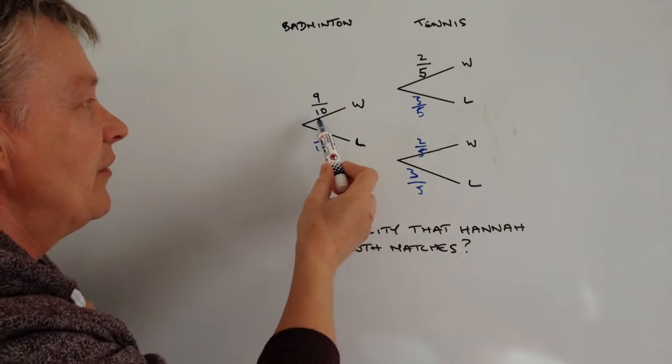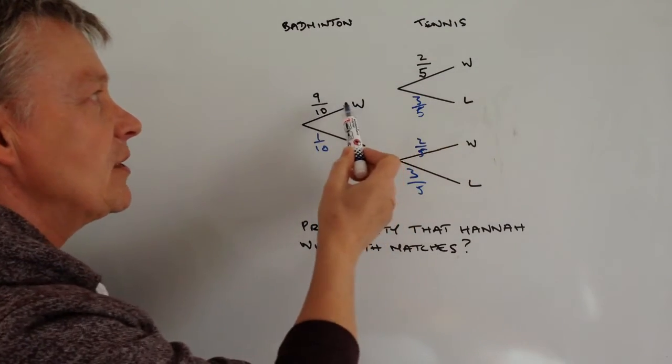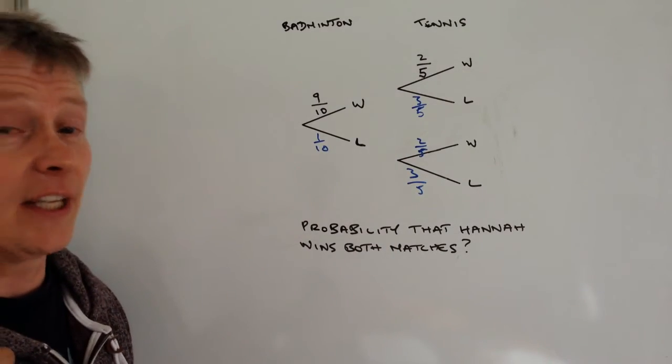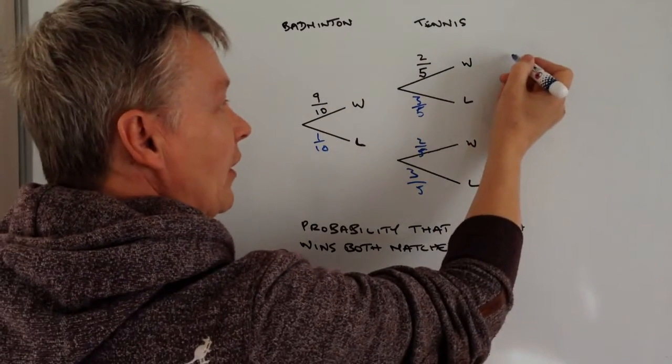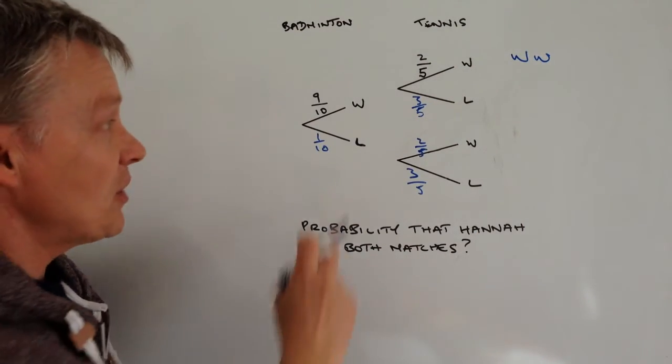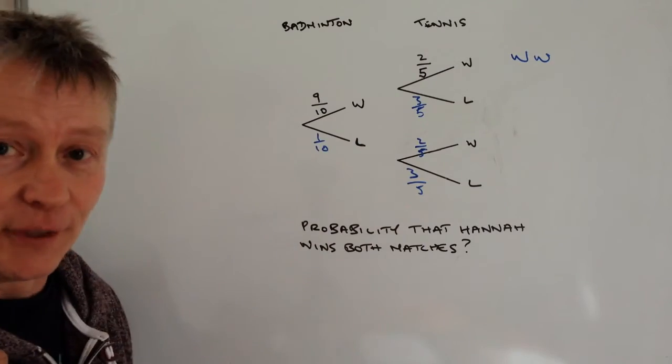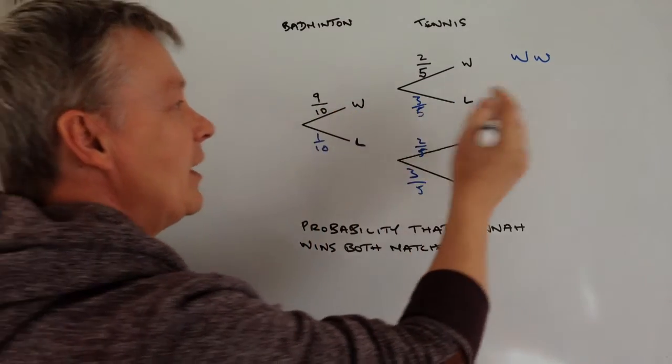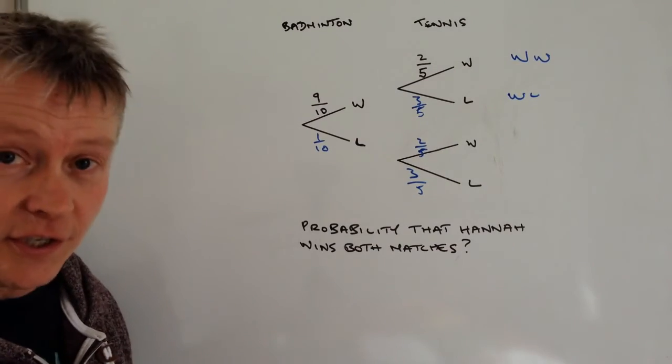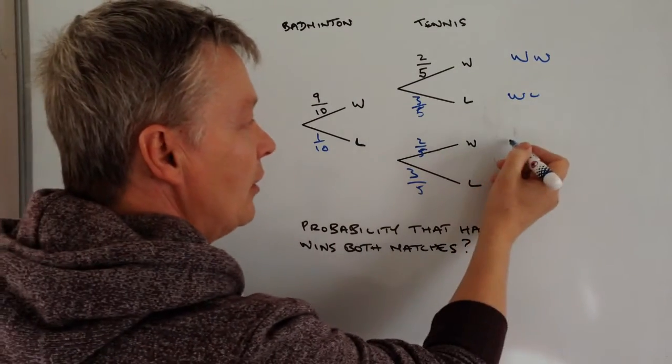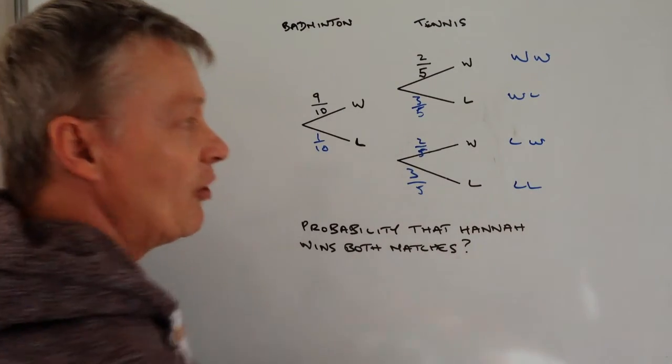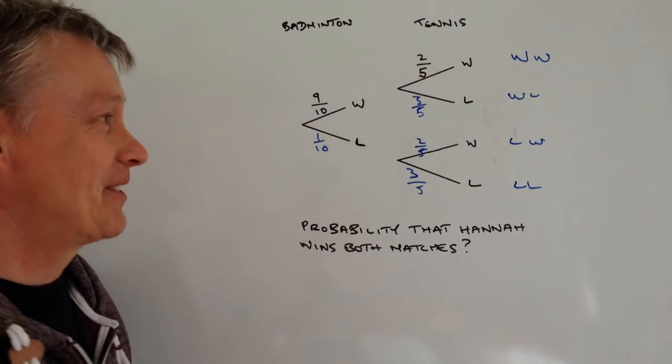Now the outcome for these top lines here is win at badminton and win at tennis. That will answer this particular question, win-win. For completeness, you've got win and lose - she wins at badminton and loses at tennis, then she loses at badminton and wins at tennis, and she loses both matches and has a very bad day.